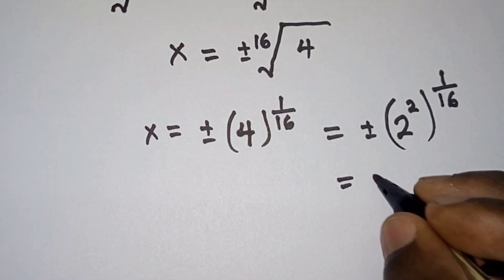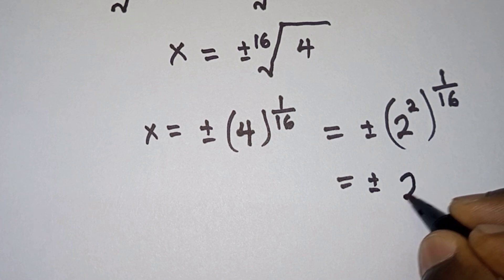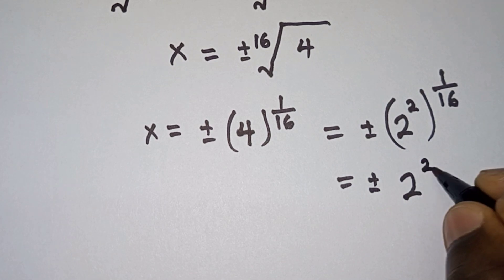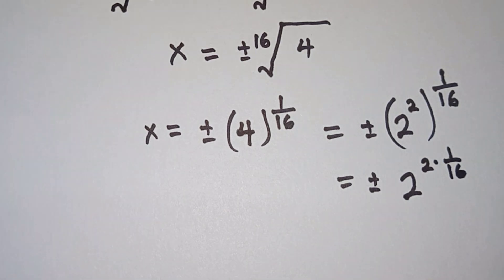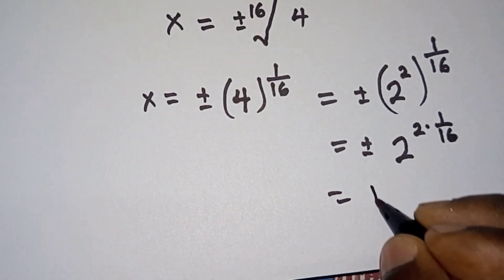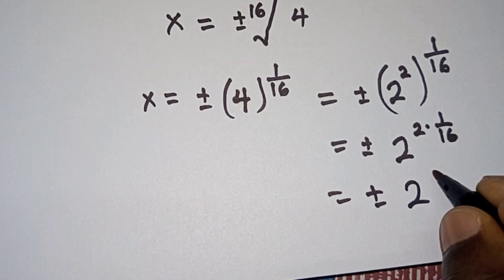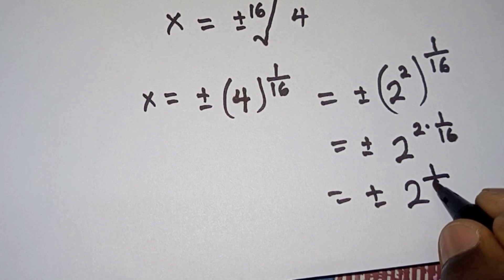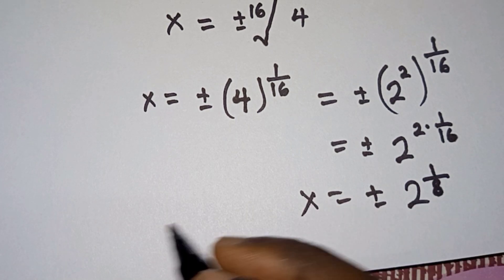Then we simplify this further as plus or minus 2 to the power 2 times 1 over 16. And we see that 2 goes into 16 eight times, so we're going to have plus or minus 2 to the power 1 over 8.